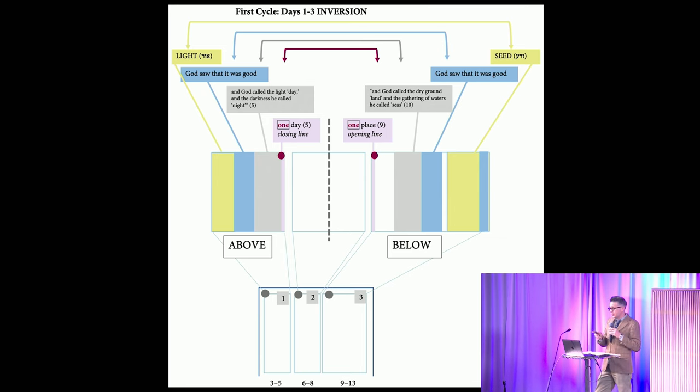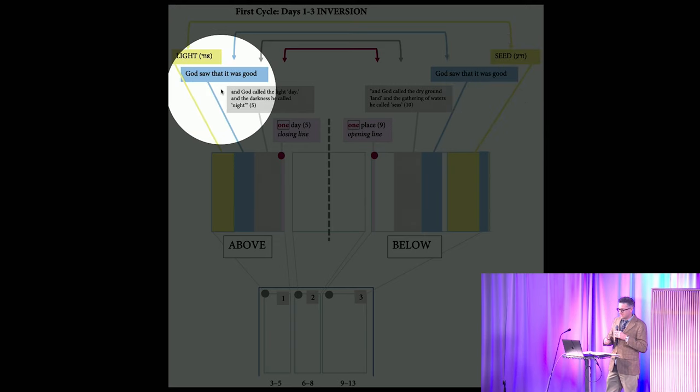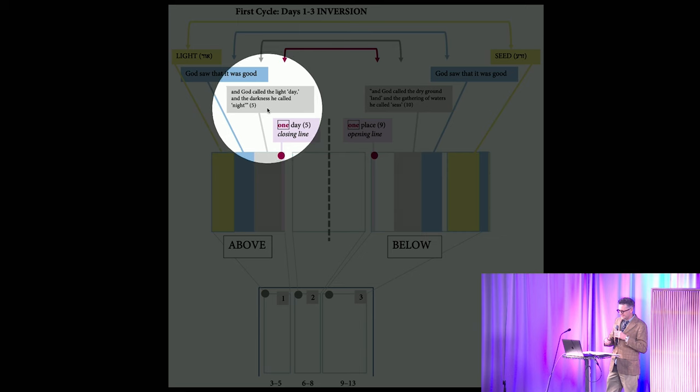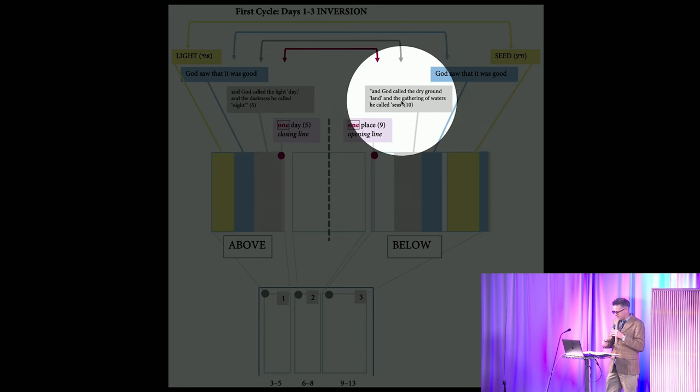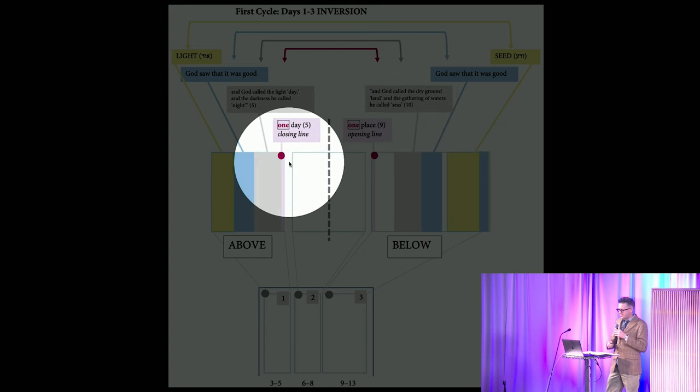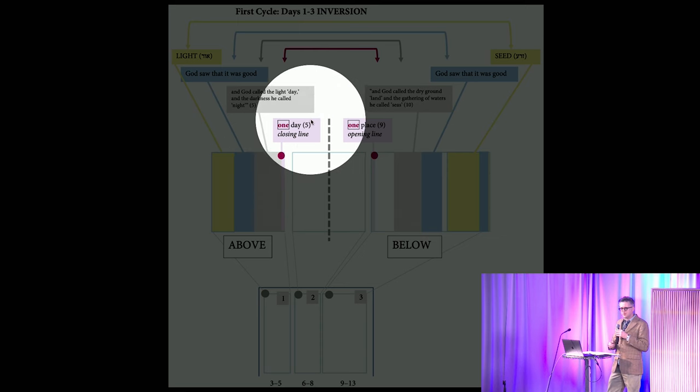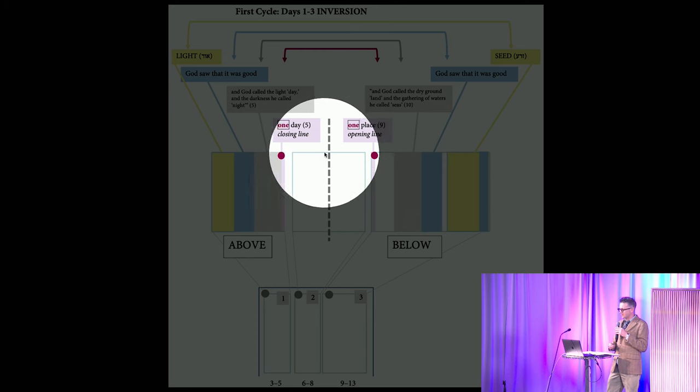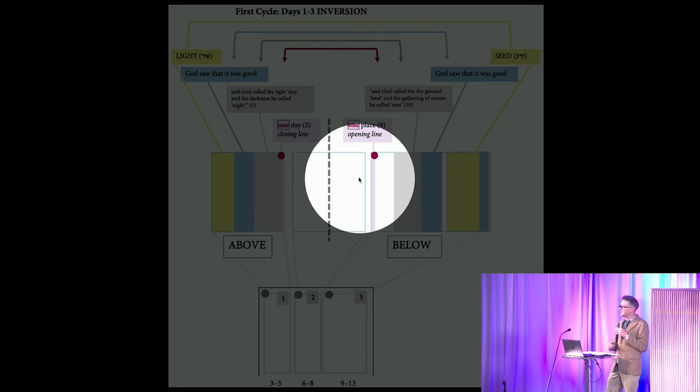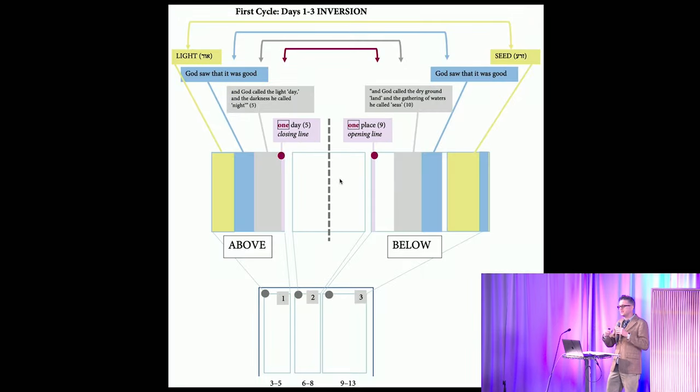Besides this linear progression, each set of days also contains a pattern distribution of features designed to support an alternative and complementary structural principle, that of inverse symmetrical correspondence. If we're looking at the first three days, it opens and closes with the provision of light and the provision of seed, God saw that it was good, and God called the light day and the darkness he called night, and God called the dry ground land and the gathering of waters he called seas. In the final line of day one, why is it that the first day does not use the ordinal, but the cardinal echad, yom echad, day one? That is given an answer when one looks at the first line of the third day: yekavu hamayim mitachatashimayim el makom echad, one place. Yom echad, makom echad.